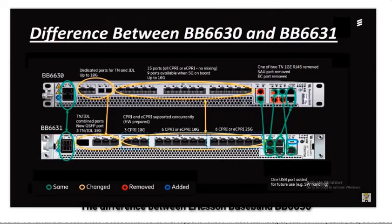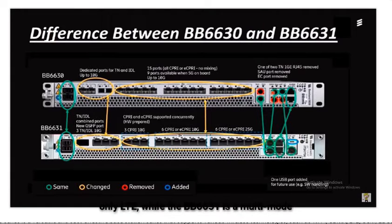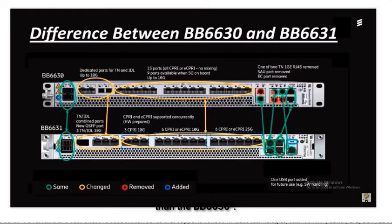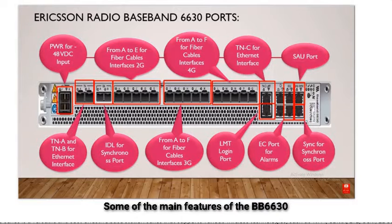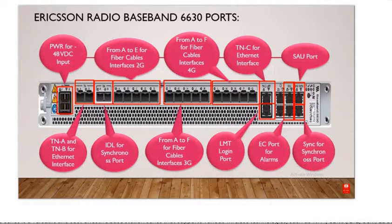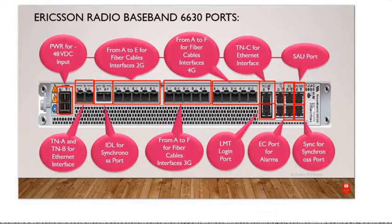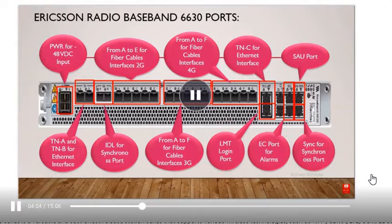The difference between Ericsson Baseband BB6630 and BB6631 is that the BB6630 is a single-mode baseband that supports only LTE, while the BB6631 is a multi-mode baseband that supports GSM, WCDMA, LTE, and 5G. The BB6631 is also more compact and energy efficient than the BB6630. Some main features of the BB6630 are: supports up to 12 LTE carriers, up to 6000 connected users, up to 3 cell carriers per sector, 4x4 MIMO and 256 QAM, carrier aggregation and licensed assisted access, massive IoT with NBIOT and CAT M1, up to 720W output power, and weighs about 40 kg.